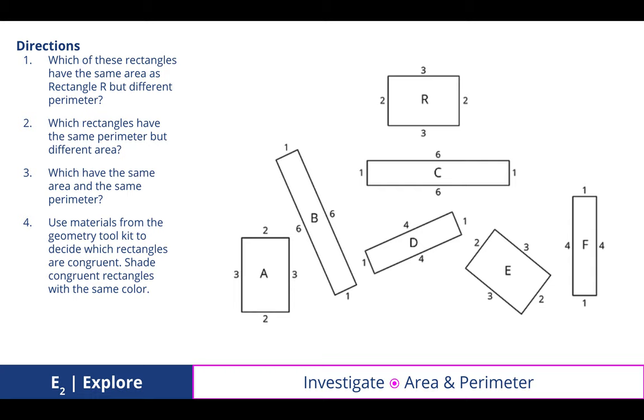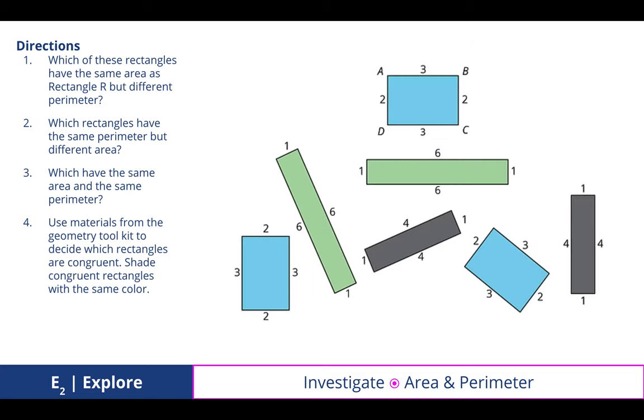I said that backwards. Sorry. All right. So different areas, but the same perimeter. So in the end, when we think about rigid transformations, congruent shapes have to have the same perimeter and the same area. And so we discovered what those three were as well by you all annotating the screen as we did this activity.